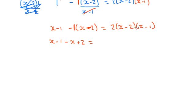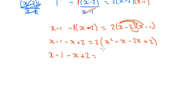On the right hand side, we need to expand these brackets. I'm going to leave the 2 for now, and I'm going to lobster these out. So we've got x squared, take away x, take away 2x, plus 2. So we've got x minus 1 minus x plus 2 equals, and now I can times everything here by 2. So that's 2x squared, take away 2x, take away 4x, plus 4.